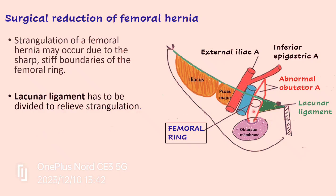What can be done surgically? You cannot cut the inguinal ligament anteriorly; you cannot cut the pectin pubis or pectineus muscle posteriorly; and medially you would not want to cut because the femoral vein is there. The only option is to increase the space of the femoral ring by dividing the lacunar ligament to relieve the strangulation.